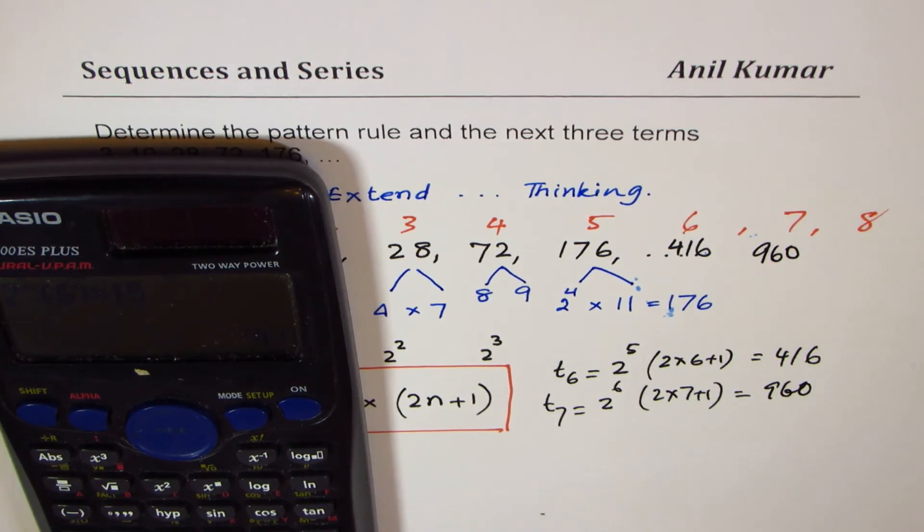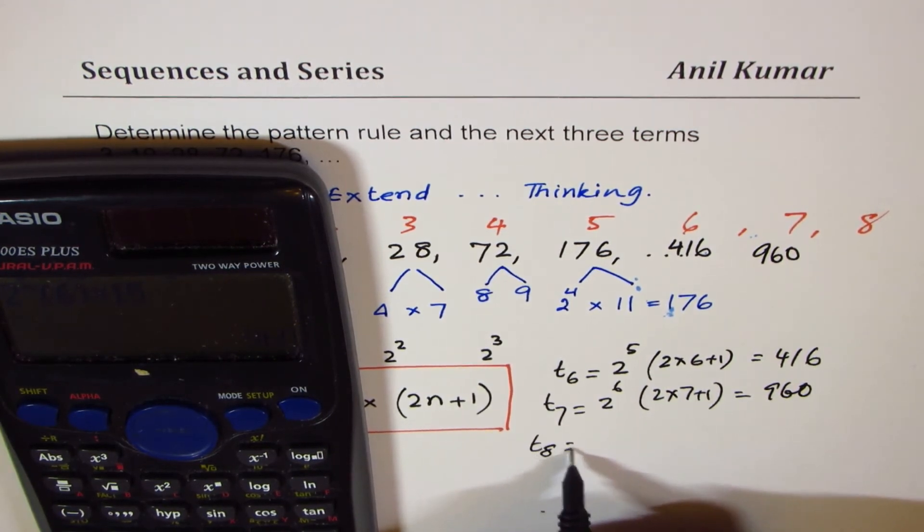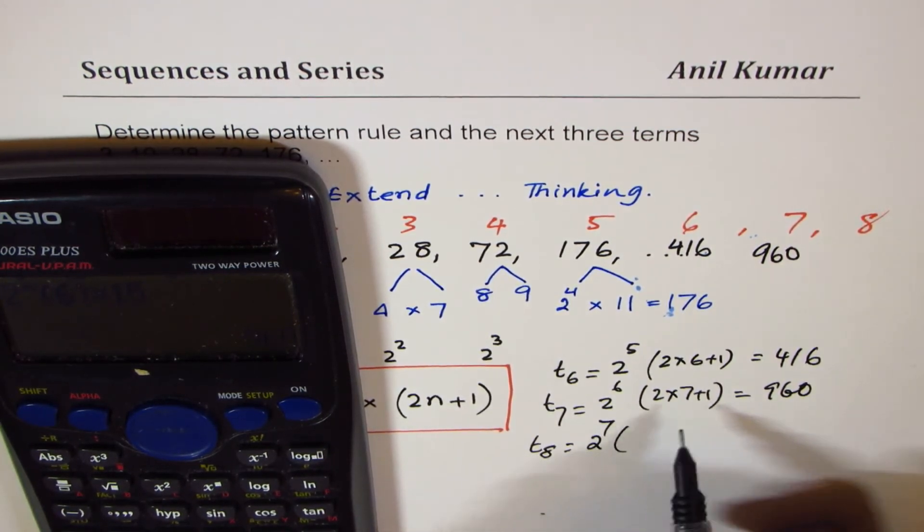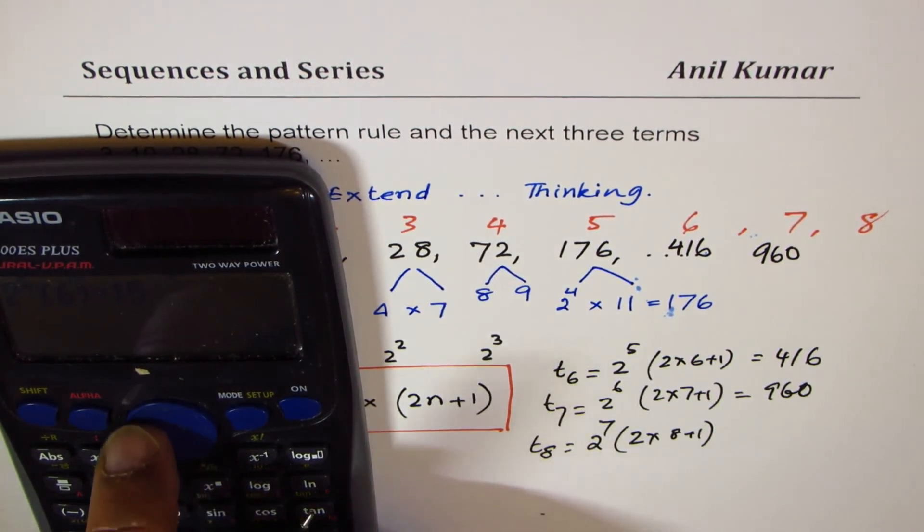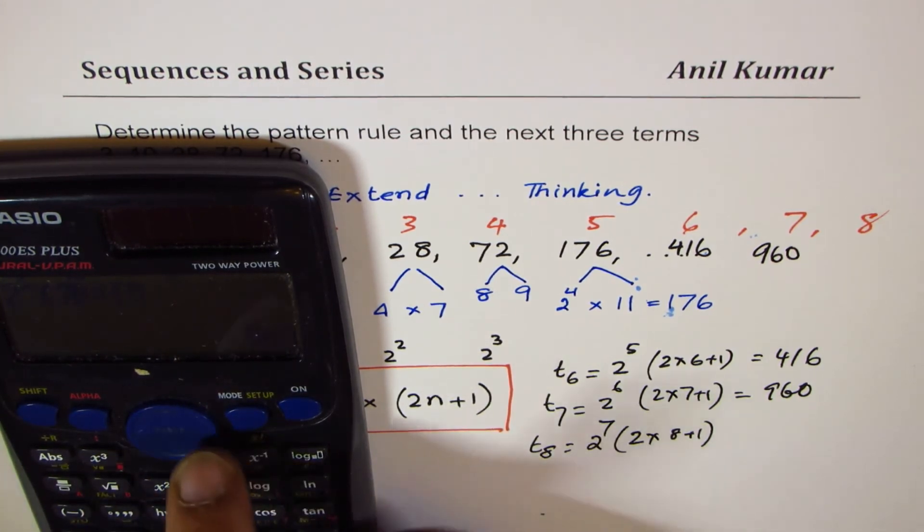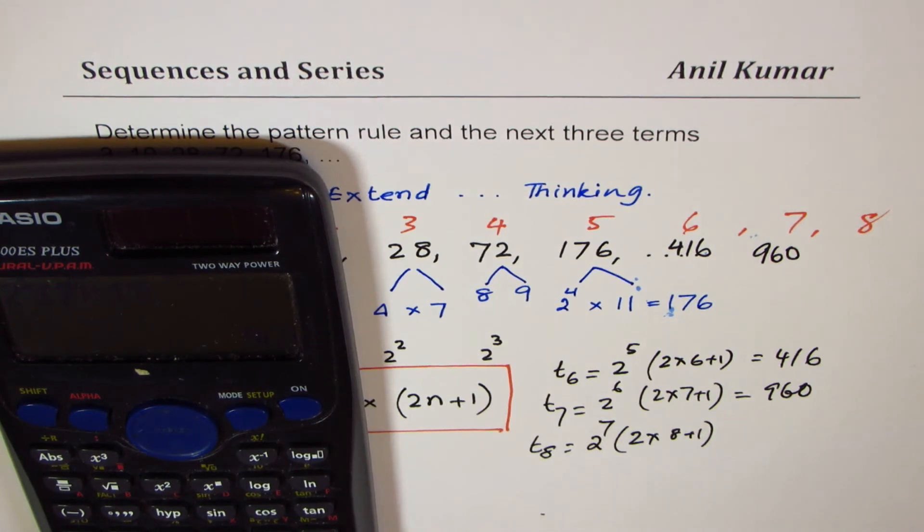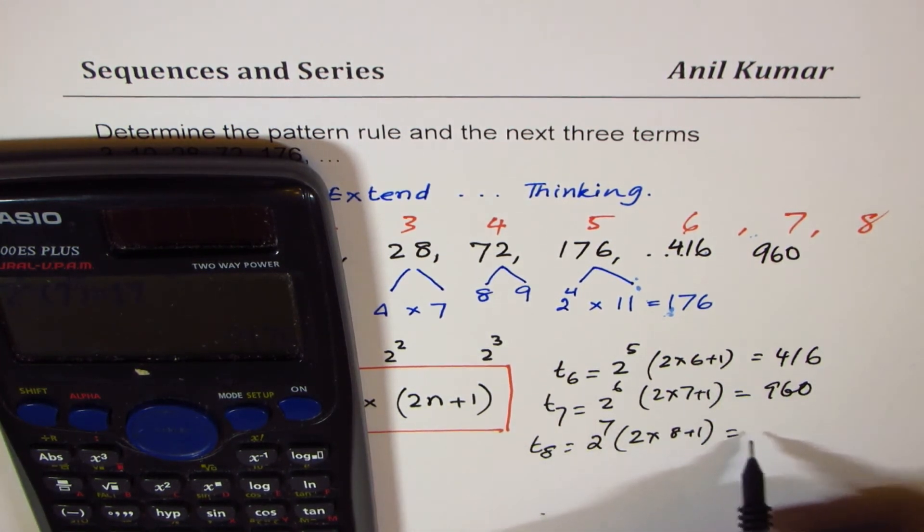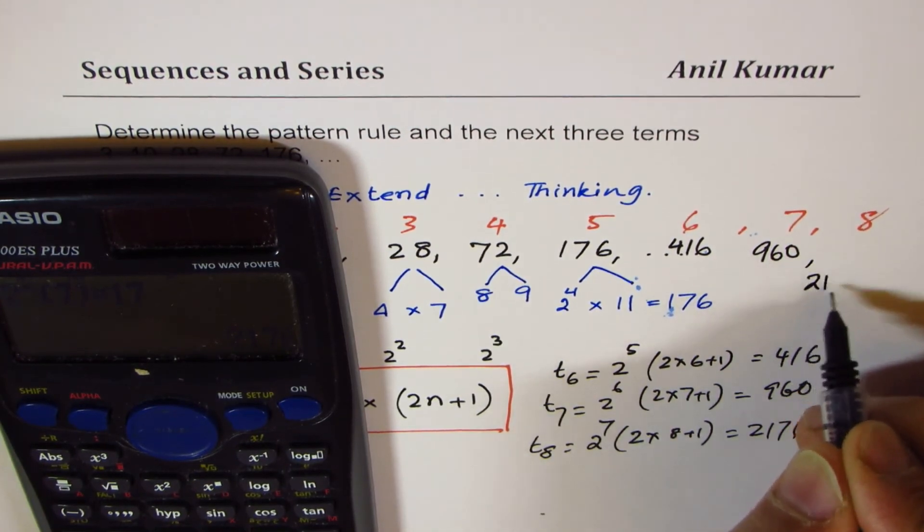And the next number, t8, should be 2 to the power of 7 times 2 times 8 plus 1, which is 17. So we'll change this to 2 to the power of 7 times 17, which is equal to 2176. So the 8th number is 2176.